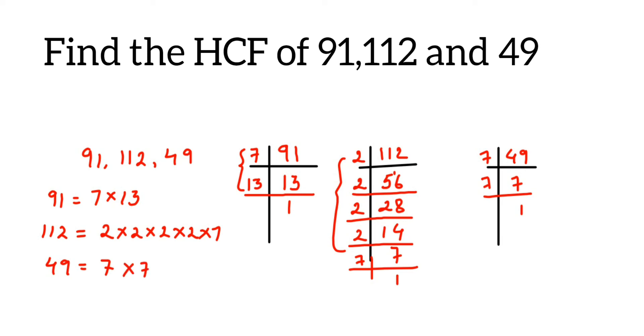Once we have done this, take the prime factor which is present in all three numbers. Like 7 - this 7, this 7, and this 7 is present in all three. So the HCF equals 7.